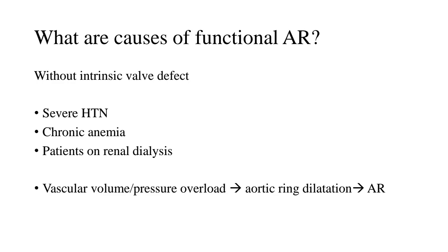What are the causes of functional aortic regurgitation? Functional means there is no intrinsic valve defect — the valve is structurally normal. Conditions like severe hypertension, chronic anemia, or patients on renal dialysis can demonstrate functional aortic regurgitation. When there is vascular volume or pressure overload within the aortic root, it leads to aortic ring dilatation, causing lack of leaflet coaptation and a central AR jet. Dialysis patients can have a combination of both volume and pressure overload.